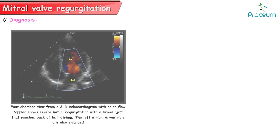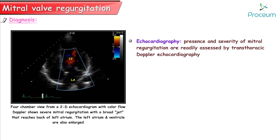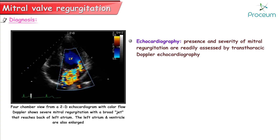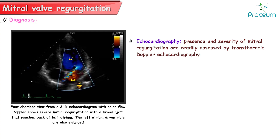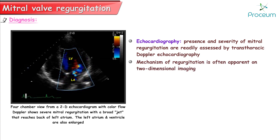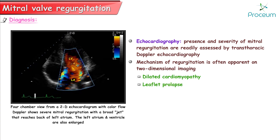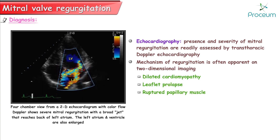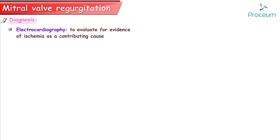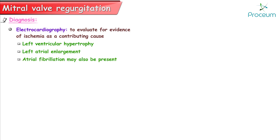Diagnosis. Mitral regurgitation can be exclusively diagnosed with echocardiography. The presence and severity are readily assessed by transthoracic Doppler echocardiography, and the mechanism of regurgitation — whether from dilated cardiomyopathy, leaflet prolapse, or ruptured papillary muscle — is often apparent on two-dimensional imaging. Electrocardiography is used to evaluate for evidence of ischemia, left ventricular hypertrophy, left atrial enlargement, and atrial fibrillation.